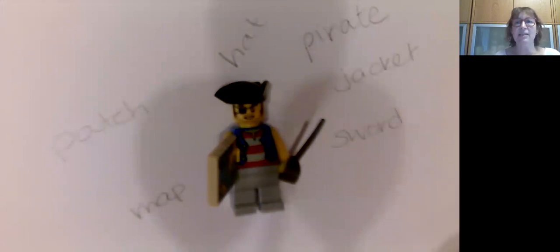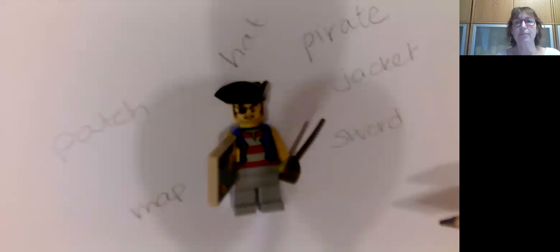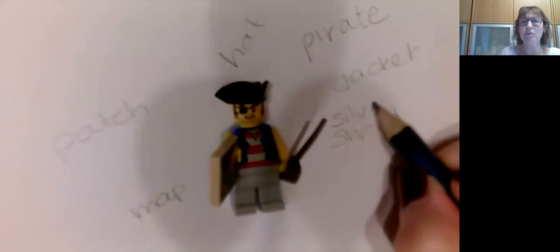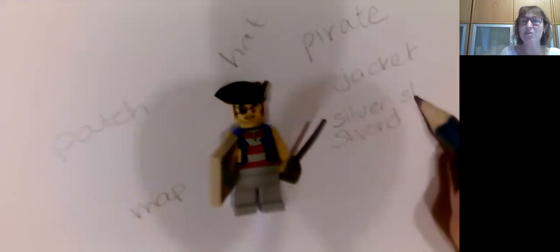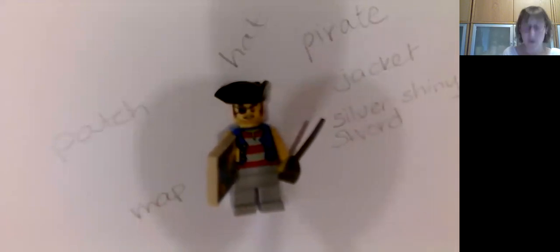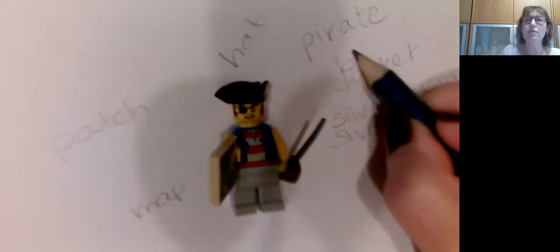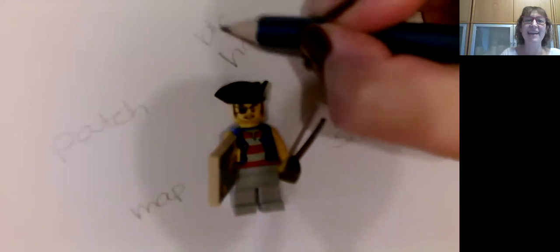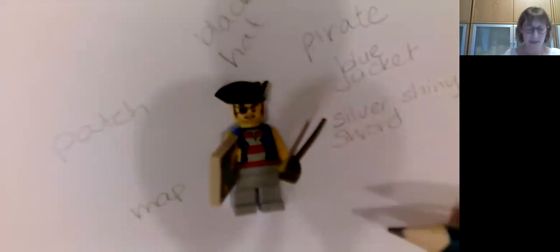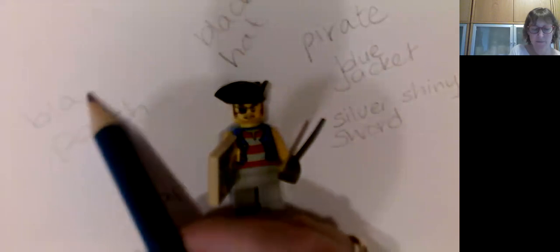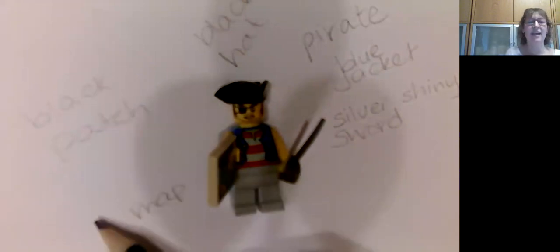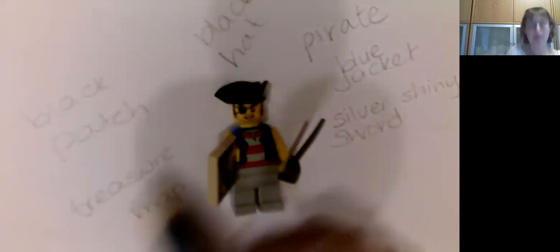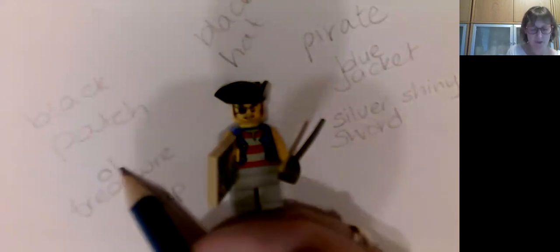An adjective describes a noun. So instead of just having sword, we could have silver sword or shiny sword. We could have a blue jacket, a black hat, a black patch, and we can have a treasure map — or even an old treasure map.